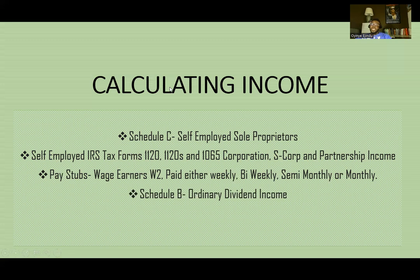The next part is Schedule B, which covers ordinary and dividend income. This is for individuals who are receiving dividend income through investments — dividends received every month, every quarter, or every year. If you are 100% just receiving dividend income, this is a great way for that to be calculated and a great process for you to take advantage of. Ordinary and dividend income is calculated and used to help you get qualified for a mortgage.